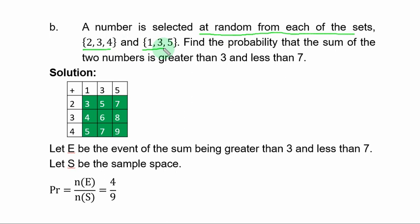The first set {2, 3, 4}, the second set {1, 3, 5}. So you add. If you add the first entry against the second set, you have 3, 5, 7. The second element in the first set, you add it to all the elements in the second set, you have 4, 6, 8. And the third element in the first set, you add it to each element in the second set, you have 5, 7, 9.